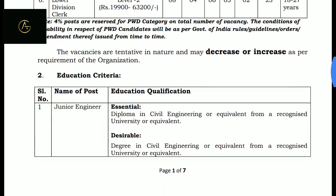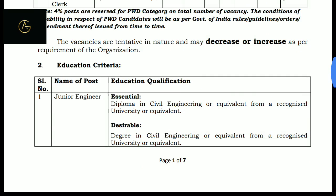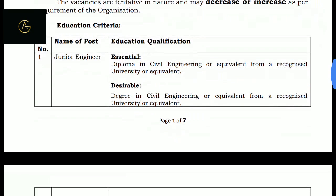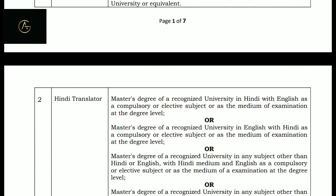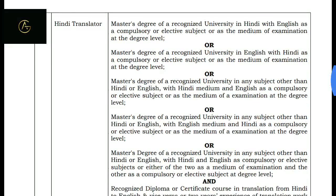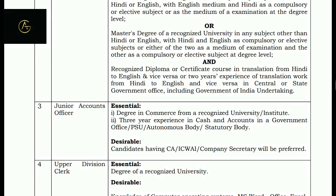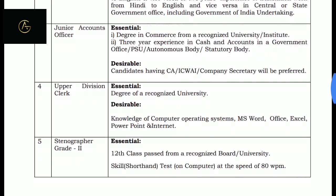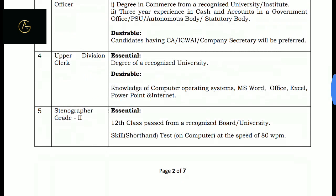Let's see the education qualification. For Junior Engineer, you must have a diploma in Civil Engineering. For Hindi Translator, a Master's degree with Hindi and English. For Junior Account Officer, Commerce degree with experience in accounts in a government office. Upper Division Clerk requires a degree and knowledge of computers.